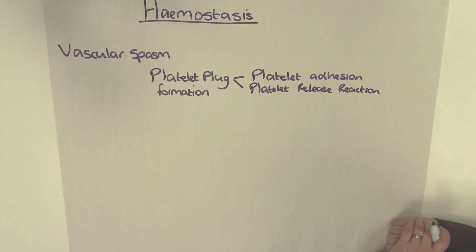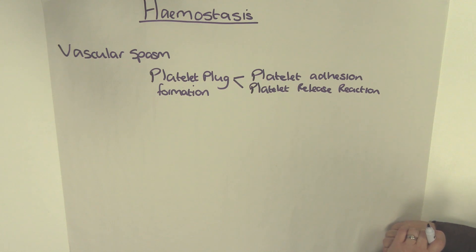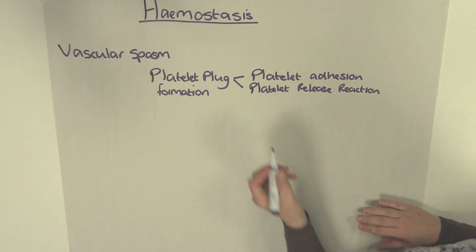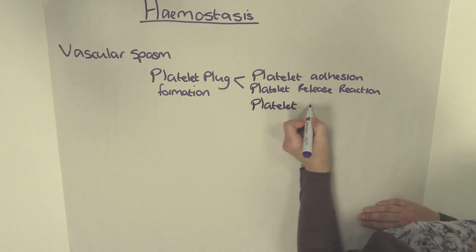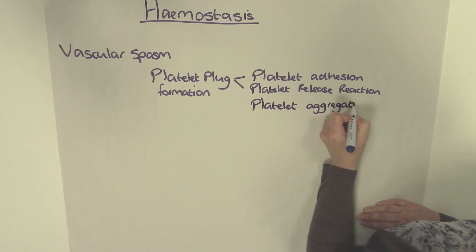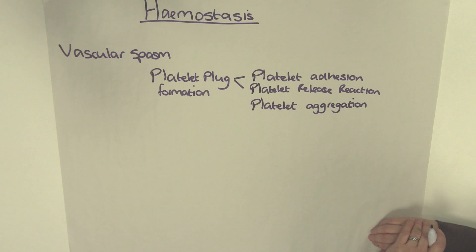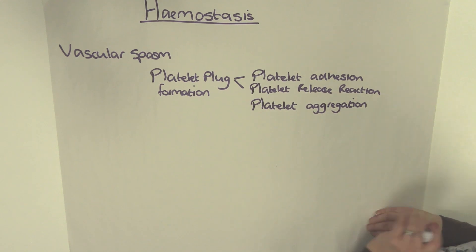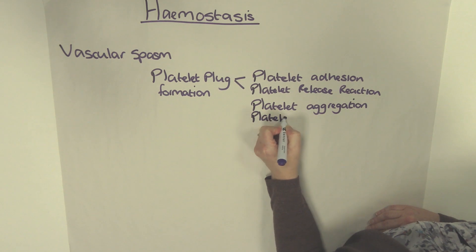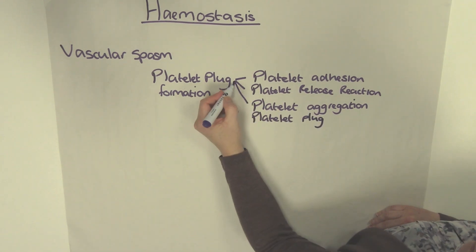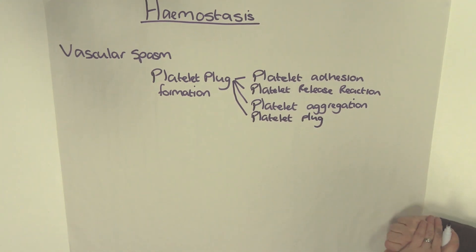They also release something called prostacycline, which stops platelets sticking to healthy intact vessel walls and contains the area of blood clotting. The sticky platelets stick to each other — this is known as platelet aggregation — and the consequential mass of platelets is known as the platelet plug.